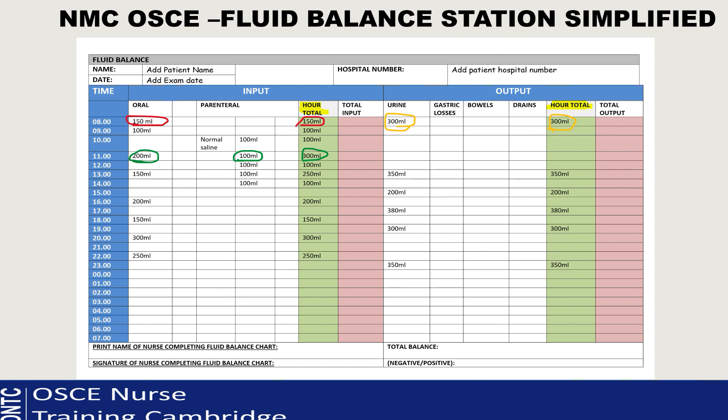At 11 o'clock it gets interesting - the total for that hour is 200ml oral plus 100ml IV, so the hourly total is 300ml. Apply that principle to the whole column until your last intake, using your calculator. Then go to the output side and complete the hourly total there as well - which is simpler because it's only urine. For example, if there's 300ml at 8 o'clock, the hourly total is 300ml; at 1 o'clock 350ml, the total is 350ml.